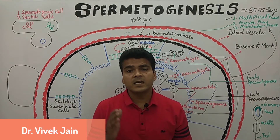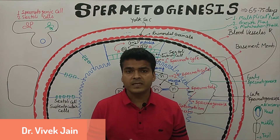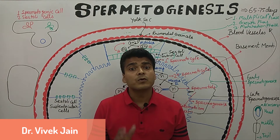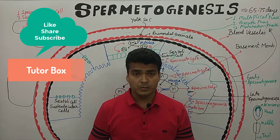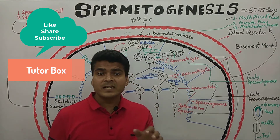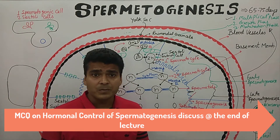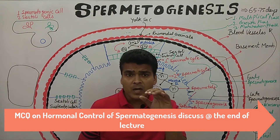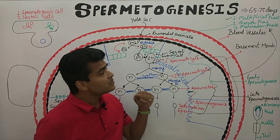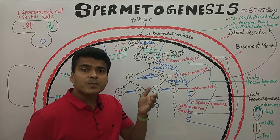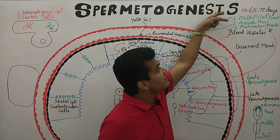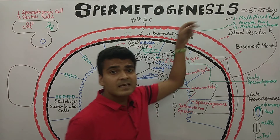Hello everyone, welcome to the channel Tutor Box. In today's class we are going to discuss hormonal control on spermatogenesis. In the last class we discussed the spermatogenesis process, so I am giving you a quick summary. Spermatogenesis is completed in three phases: multiplication phase, growth phase, and maturation phase.